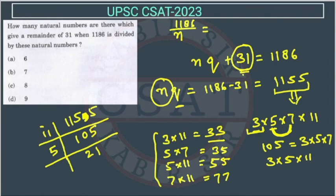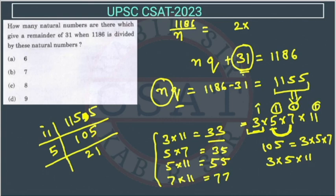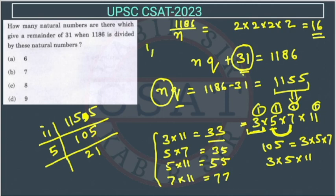There is another way to solve this. The total number of factors of 1155: since all prime factors (3, 5, 7, 11) have power 1, the total factors = (1+1)(1+1)(1+1)(1+1) = 2×2×2×2 = 16 factors. Out of these 16 factors, we reduce those which are less than 31.